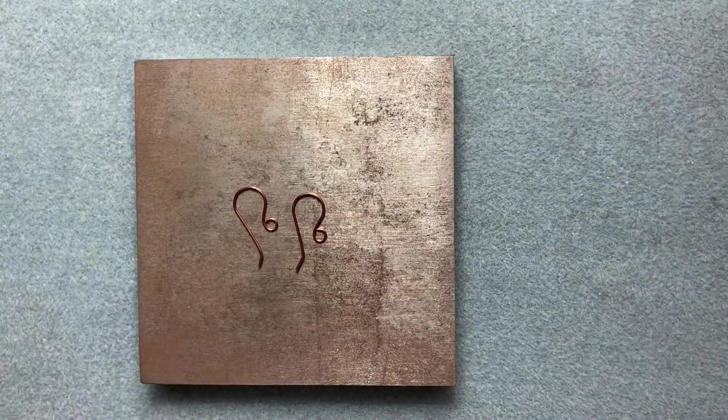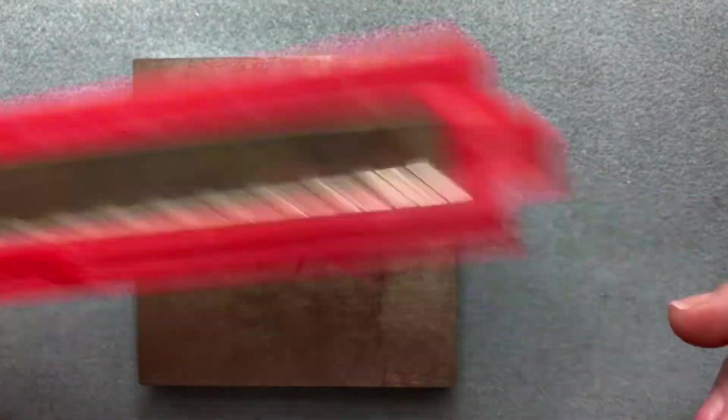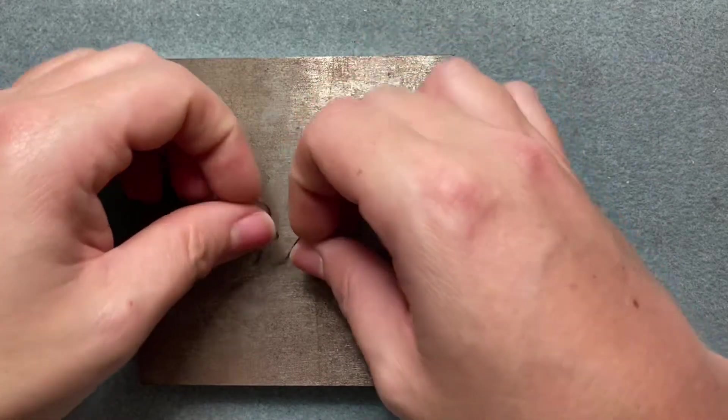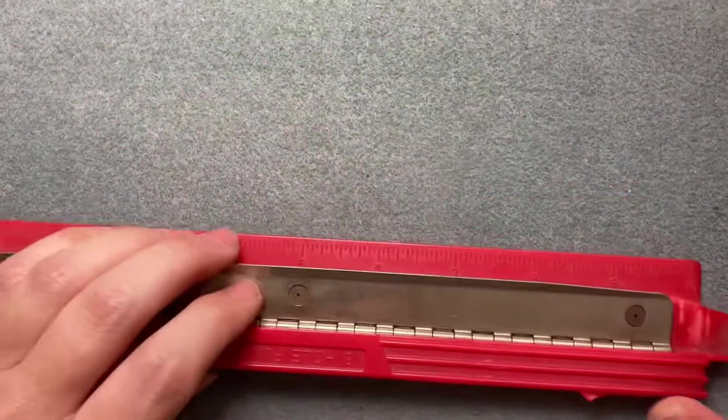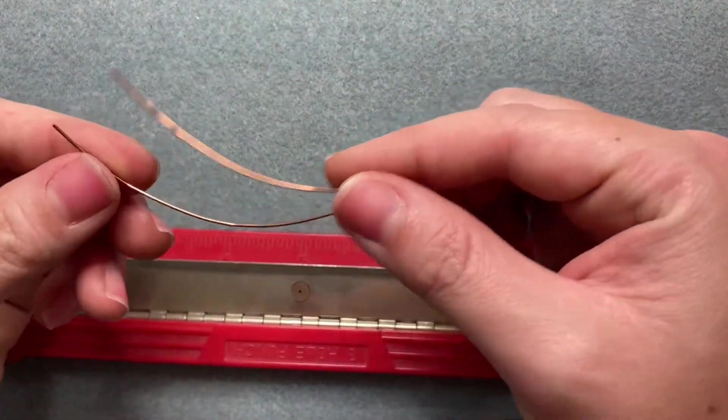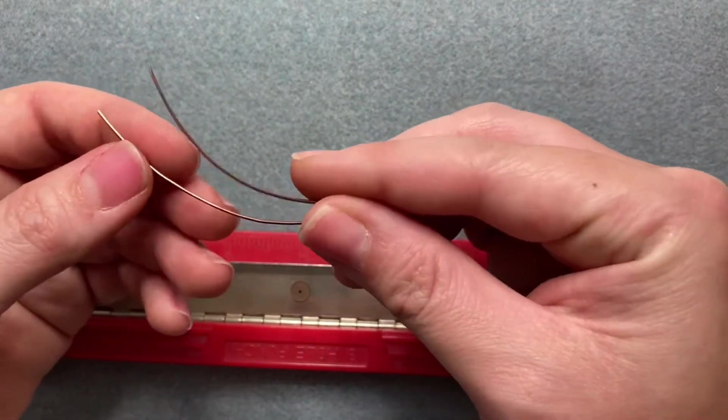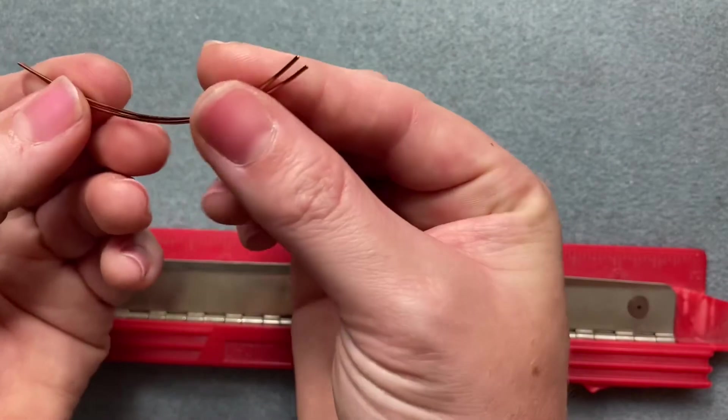Last but not least, you will need a ruler. So to get started, you're going to want to measure out with your ruler three inches of wire, two pieces. I've already done that for ease, so again they measure the same at three inches.